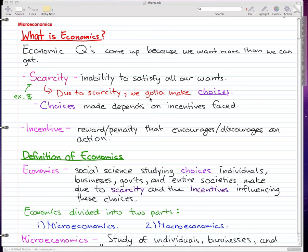And due to scarcity, we got to make choices. We only have limited income. So we got to make choices on what to buy, to buy food or to buy games. And choices are made depending on the incentives faced.